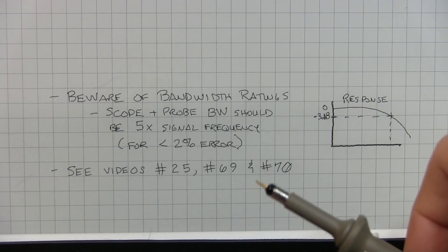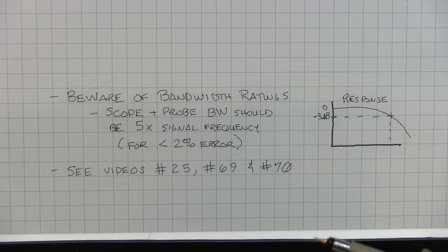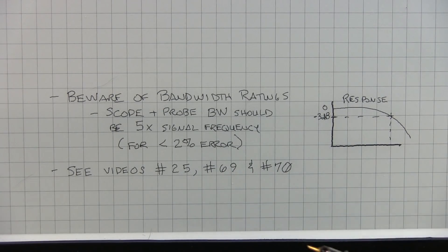In my case, I was running a 90 megahertz signal into a 100 megahertz scope. I'm operating way down here. So the signal is being depressed by the frequency response of the scope. Now videos 25, 69, and 70 all deal with oscilloscope bandwidth ratings and how to interpret them.